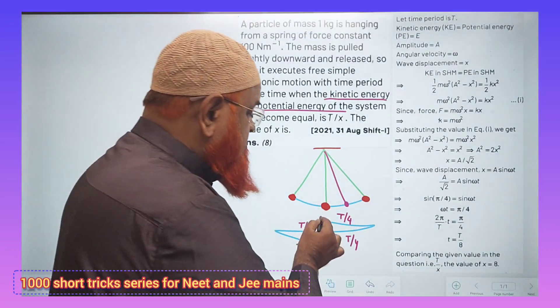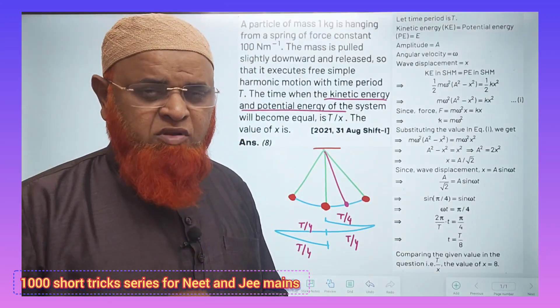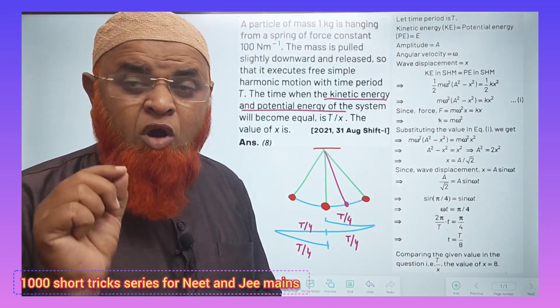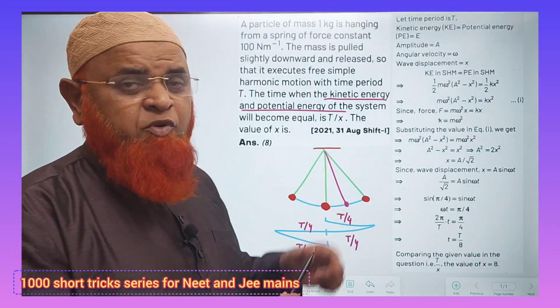simple harmonic motion, when a body moves from mean position to extreme position, it takes one-fourth of the time period. Do you know at what point potential energy and kinetic energy will be equal from the mean position?